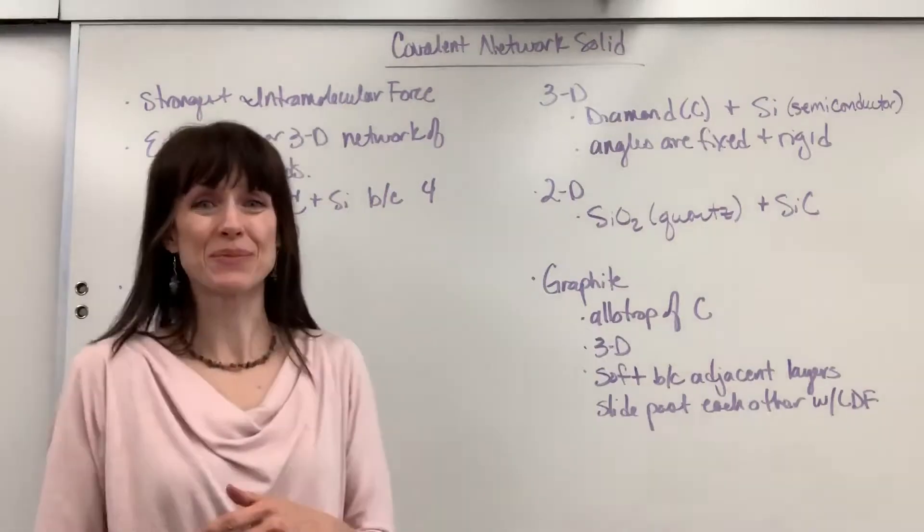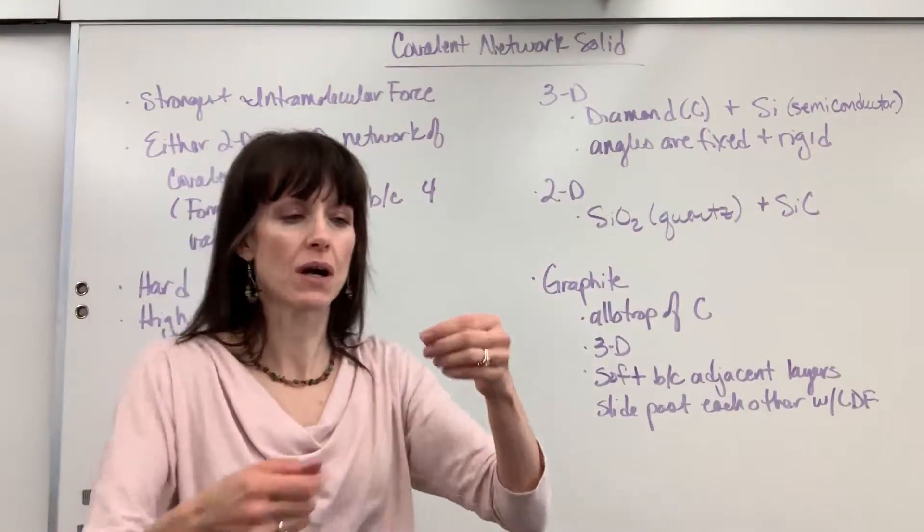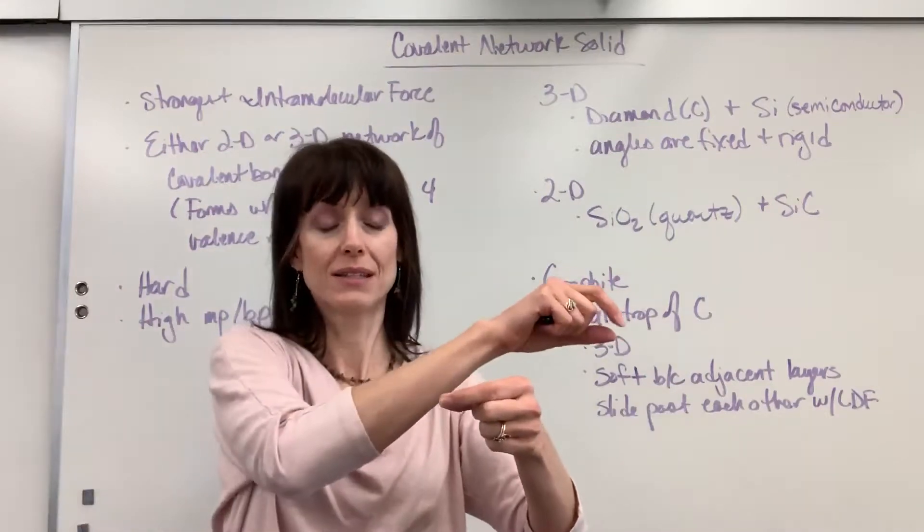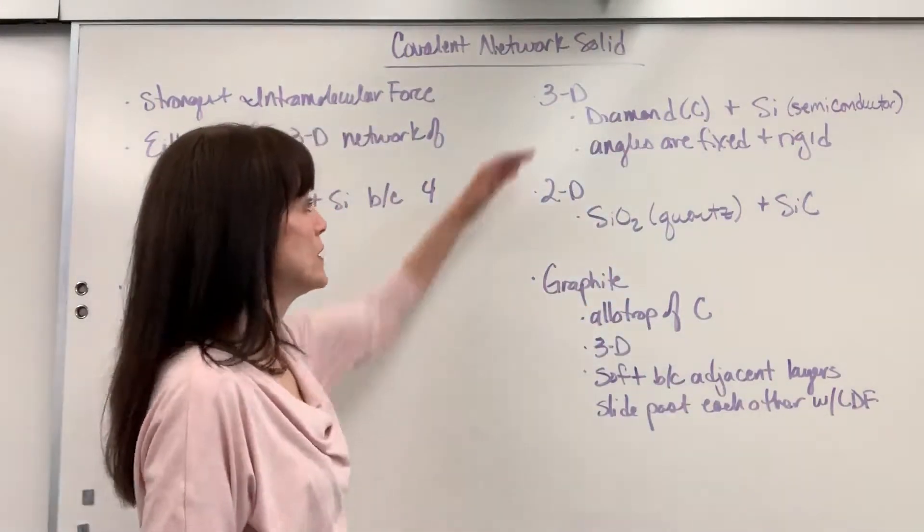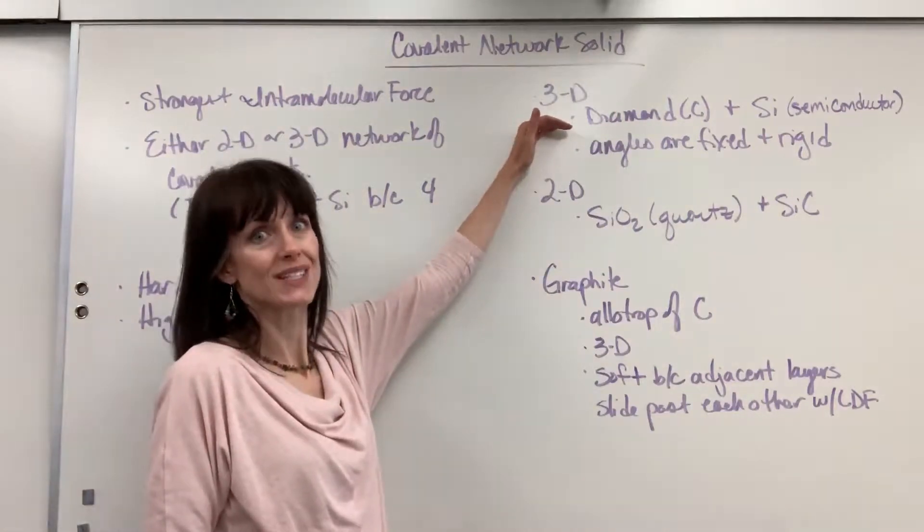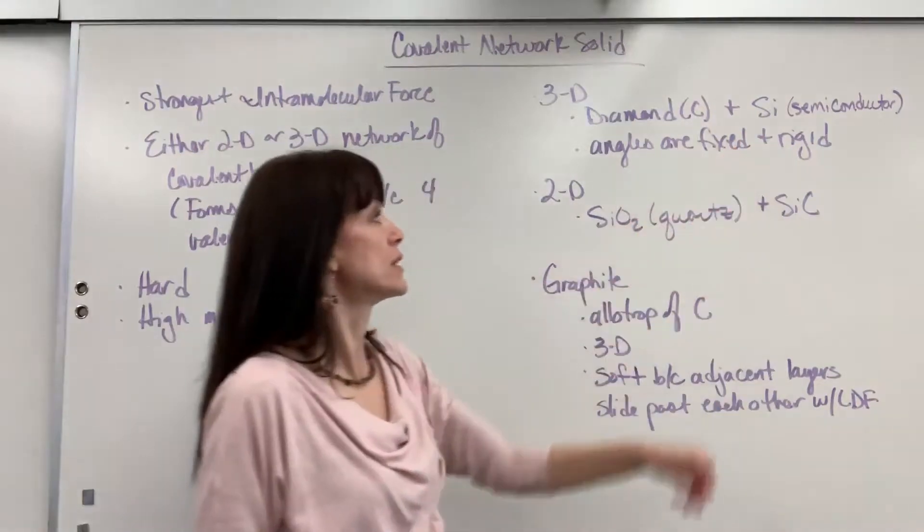Okay, some examples for you. A 3D covalent network. So this is going to be carbon looking three dimensionally, bonding to itself with four different carbons. So diamond number one, quintessential example. Silicon also does a 3D covalent network.